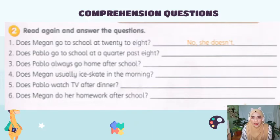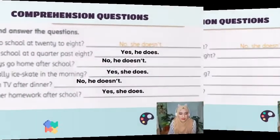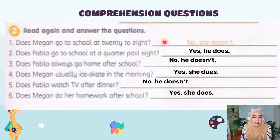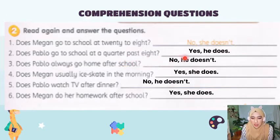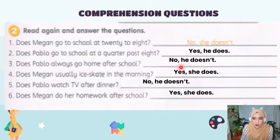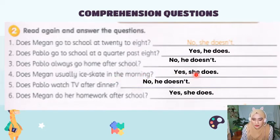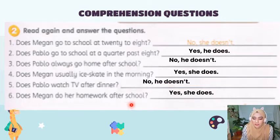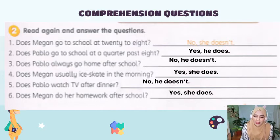Now, let's look at the answers. Number one has been provided. Number two: Does Pablo go to school at a quarter past eight? Yes, he does. Number three: Does Pablo always go home after school? No, he doesn't. Number four: Does Megan usually ice skate in the morning? Yes, she does. Number five: Does Pablo watch TV after dinner? No, he doesn't. Number six: Does Megan do her homework after school? Yes, she does. How many did you get correct? Let me know when you message me.